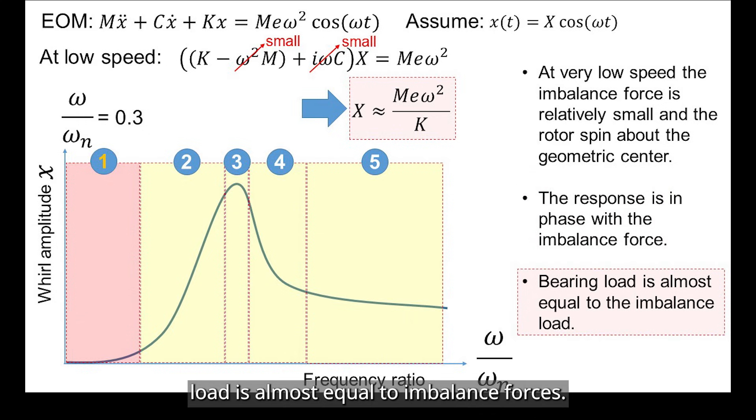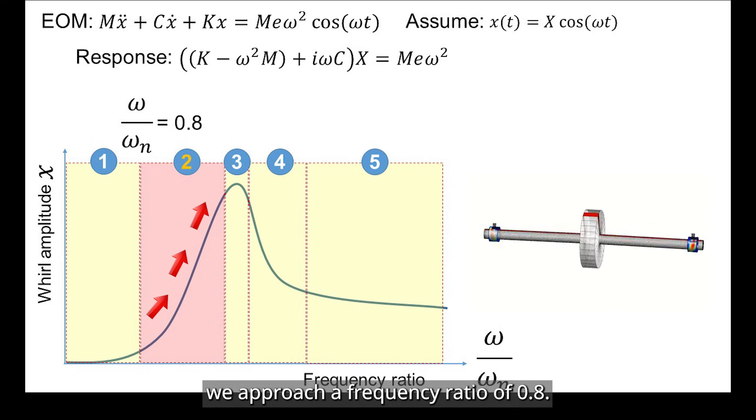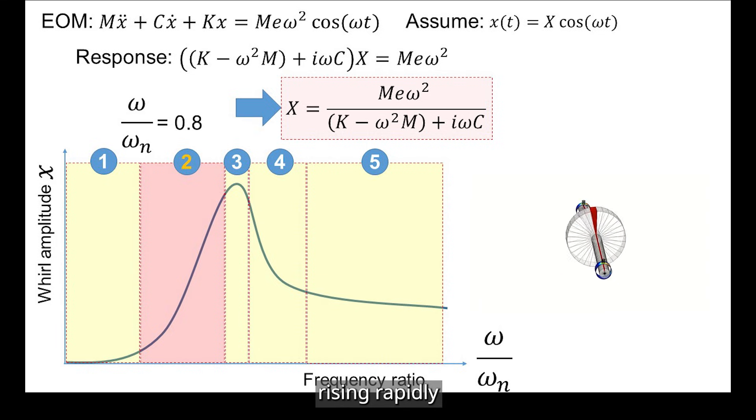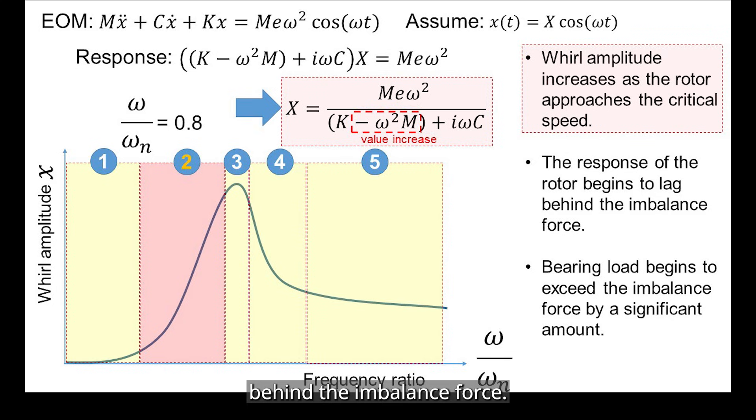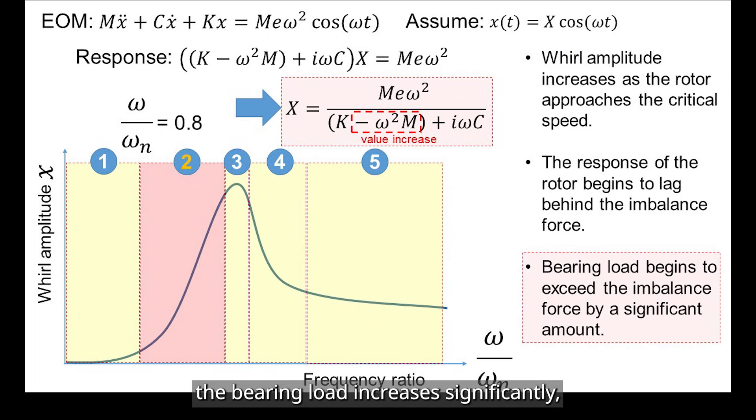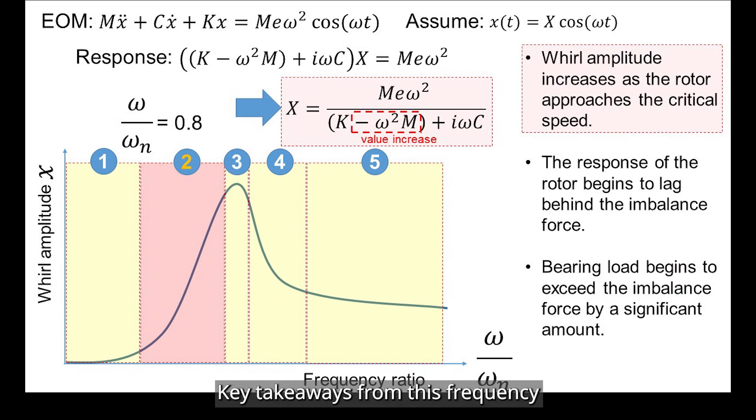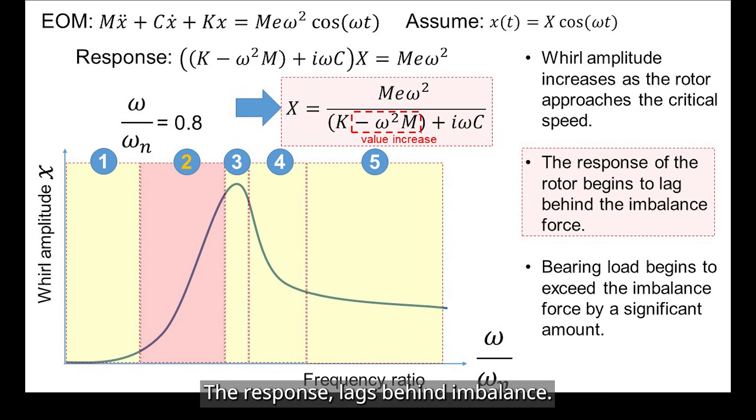As rotor speed increases, we approach a frequency ratio of 0.8. The amplitude of vibration starts rising rapidly, and the rotor's motion begins to lag behind the imbalance force. The equation shows that the denominator in the response equation shrinks with increasing running speed, amplifying the motion. Also, the bearing load increases significantly, often exceeding the imbalance force itself. Key takeaways from this frequency ratio around 0.8 is that vibration amplitude increases steeply, and response lags behind imbalance.